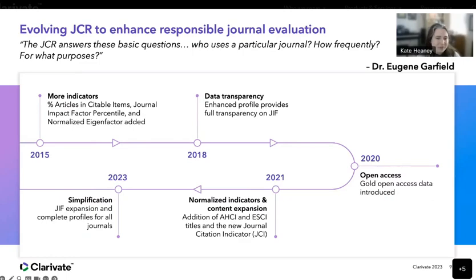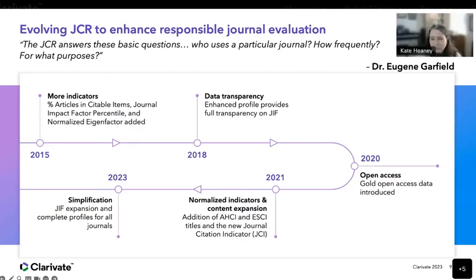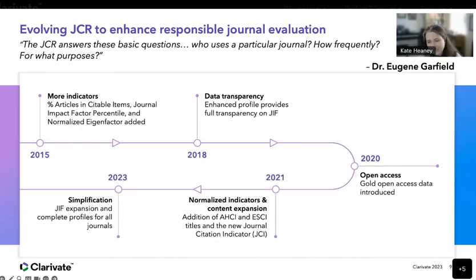The JCR has been around since 1975. We've made a number of changes over the decades, including key changes in the past several years. In 2015, we introduced additional indicators such as the JIF percentile. In 2018, we improved transparency on the JIF with the journal profile page. In 2020, we added gold open access information. In 2021, we launched a new interface, added profile pages for journals in the Arts and Humanities Citation Index and Emerging Sources Citation Index for the first time, and introduced the Journal Citation Indicator. This year, we are expanding the JIF and completing the profiles for all journals in the Web of Science Core Collection and the JCR.